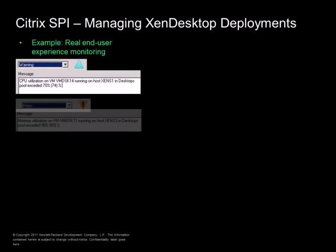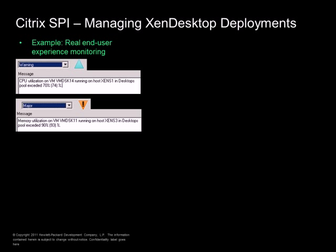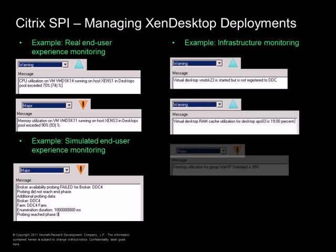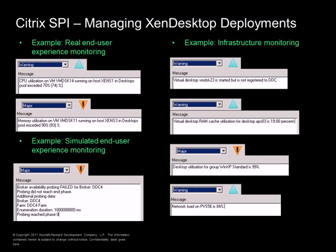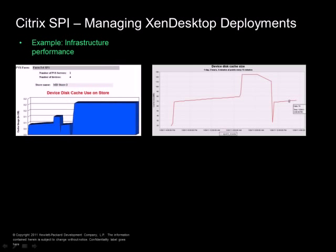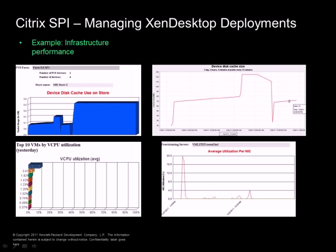Let's take a look at a few Citrix Spy sample alerts. The first real end user experience monitoring alert depicts high CPU and memory utilization on a virtual desktop. Simulated end user experience reveals an issue with XML broker availability. Infrastructure monitoring alerts depict various virtual desktop issues, high RAM cache utilization, as well as high desktop group utilization and network load on provisioning server. A few more infrastructure performance reports and graphs depict provisioning server disk cache use, average utilization of network interface cards, as well as top virtual desktops by CPU utilization.